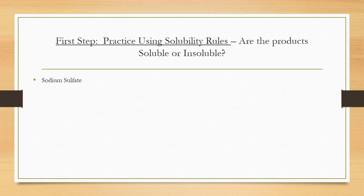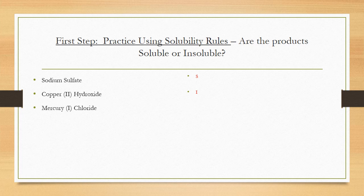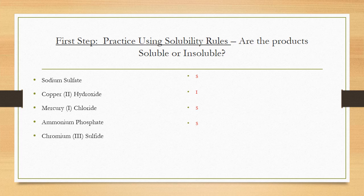Here are some worked examples. Sodium sulfate: sodium salts are soluble, so it is soluble. Copper hydroxide: only sodium, potassium, and calcium hydroxides are soluble, so copper hydroxide is insoluble. Mercury chloride: all chlorides are soluble except silver and lead, so mercury chloride is soluble. Ammonium phosphate: all ammonium compounds are soluble. Chromium sulfide: insoluble. Lead sulfate: a lead salt, so insoluble.